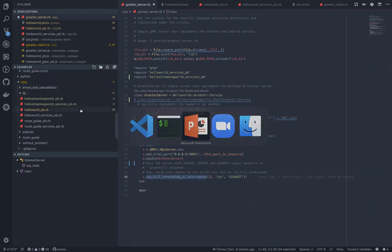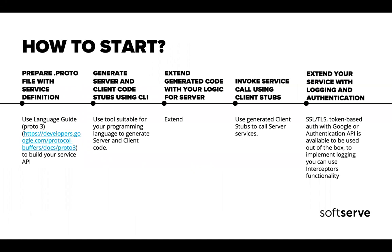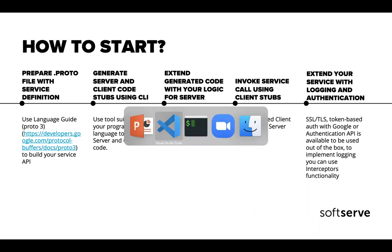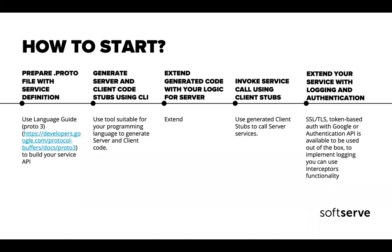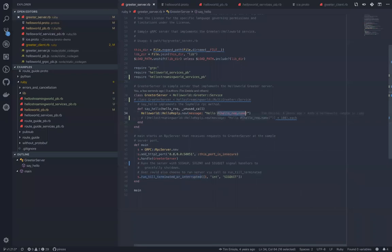That was a short demo of how it works. Getting back to how to start: you prepare a proto file with the service definition using the language guide on developers.google.com. Then you generate client code and stubs using the CLI — I just showed you how to do that in Ruby. For other languages it's the same; you just change 'Ruby' to 'Go,' for example. Once generated, you extend the generated code with your logic for the server, like changing 'Hello World' to 'Hello Softserve.'